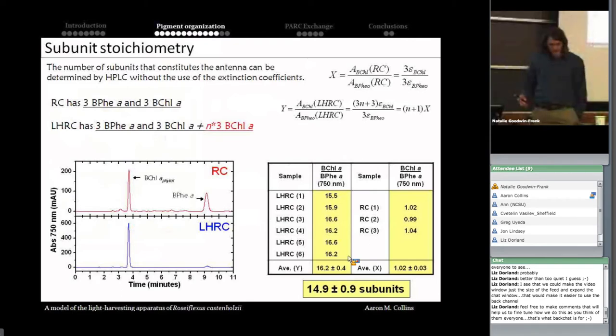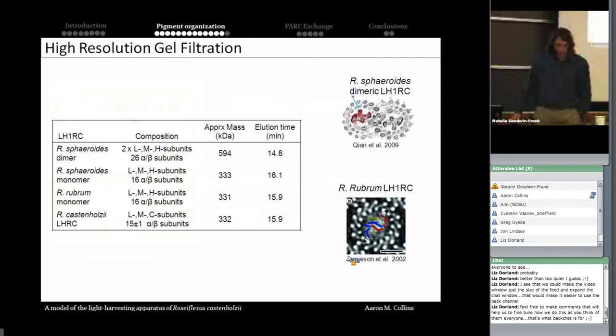And so after that, I definitely wanted to check whether that would be a rational number or not. And so with the help of one of Neil Hunter's students, or post-docs, we were able to use three complexes from the purple bacteria in which we know their subunit composition. This is the LH, this is the core complex, the dimeric form from Rhodobacter sphaeroides, its monomer counterpart, as well as the monomer from Rhodospirillum rubrum. We know how many subunits comprise each one of these complexes, as well as their approximate mass. And when we ran high-resolution gel filtration and compared their elution times, we were able to see that there's a very similar elution time between the monomeric forms of each of these core complexes and the Roseiflexus castenholzii core complex. And the number of subunits in each one of these antenna complexes are similar, either 15 plus or minus one, as we proposed, as well as 16 for these other cases. On the right, these are images generated from EM where you can actually count the number of subunits in each one of these complexes.